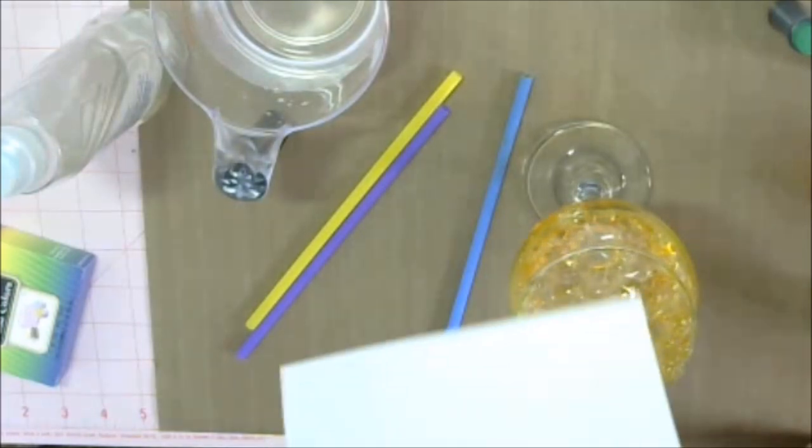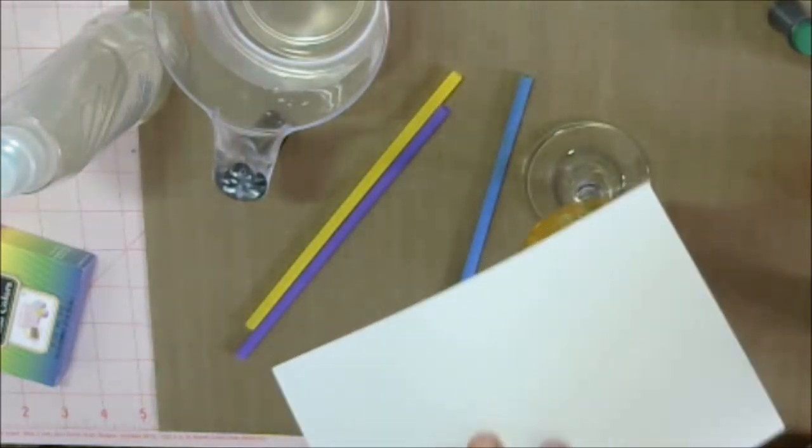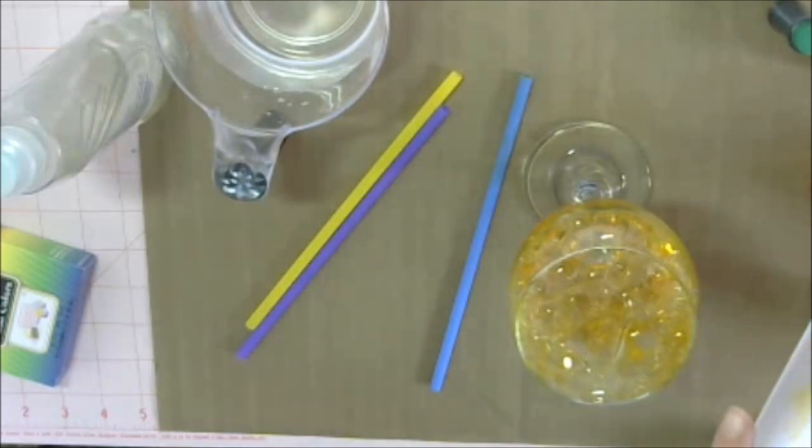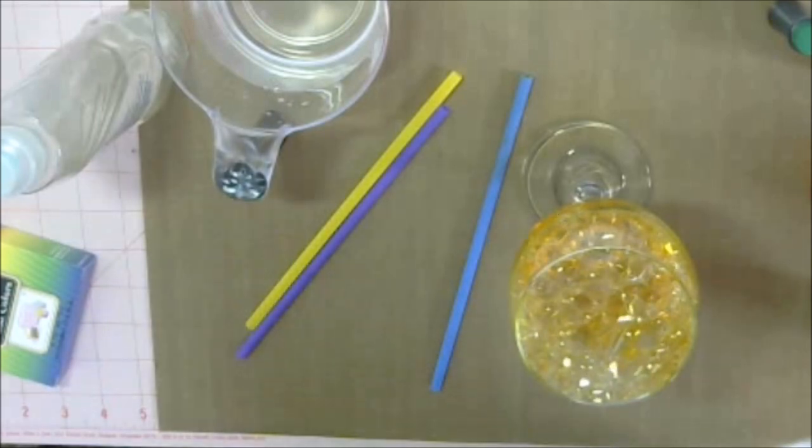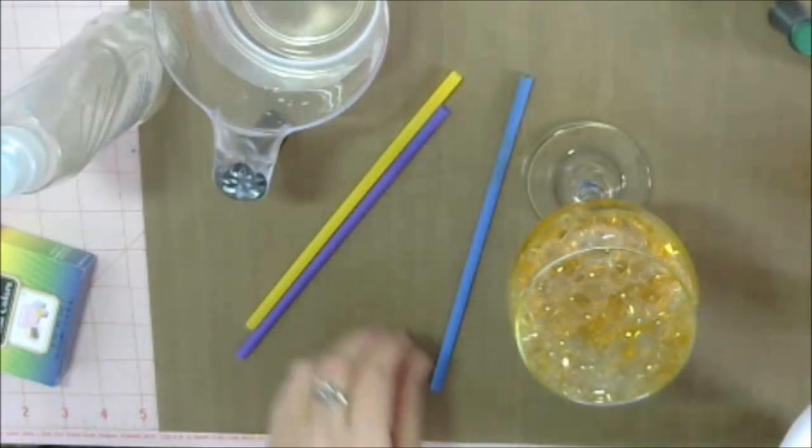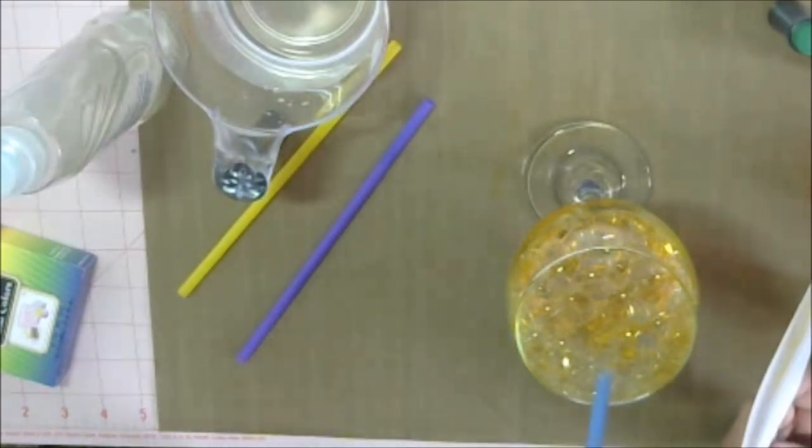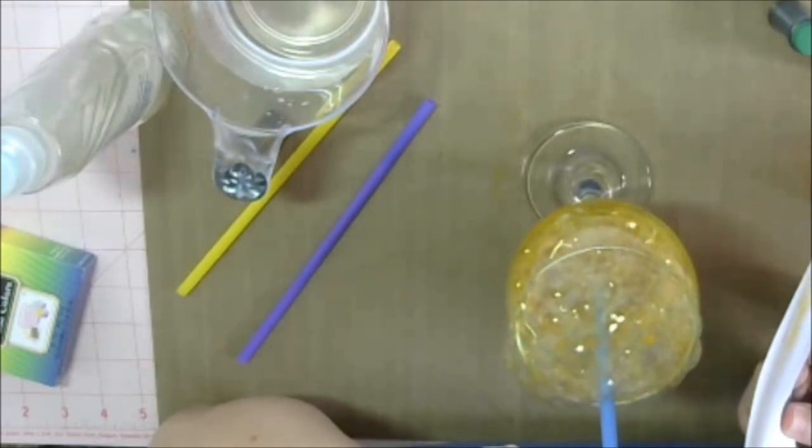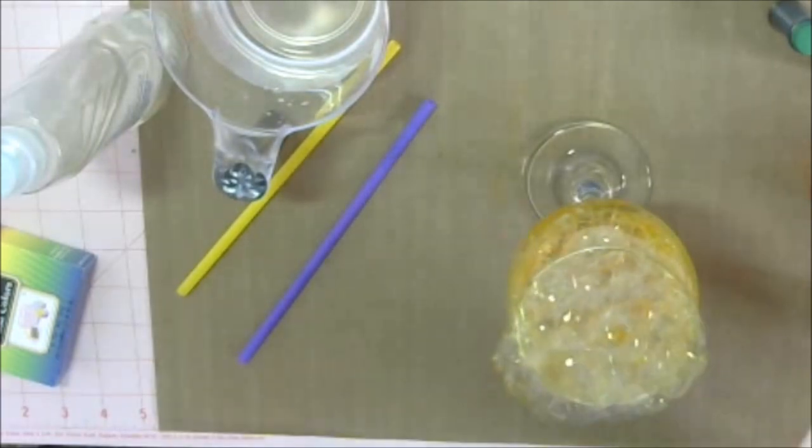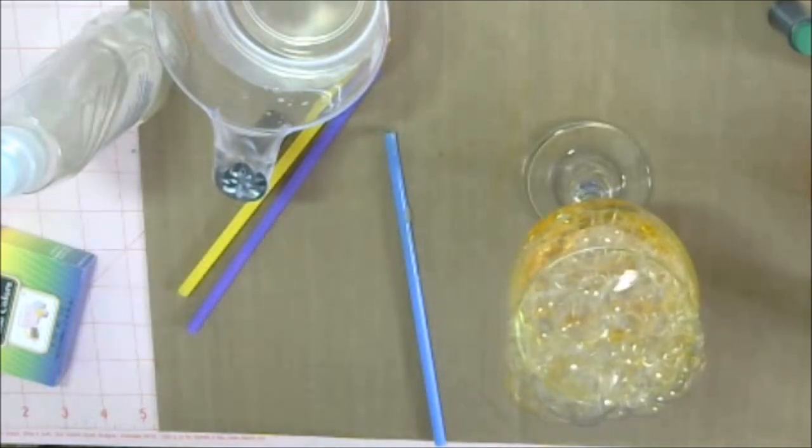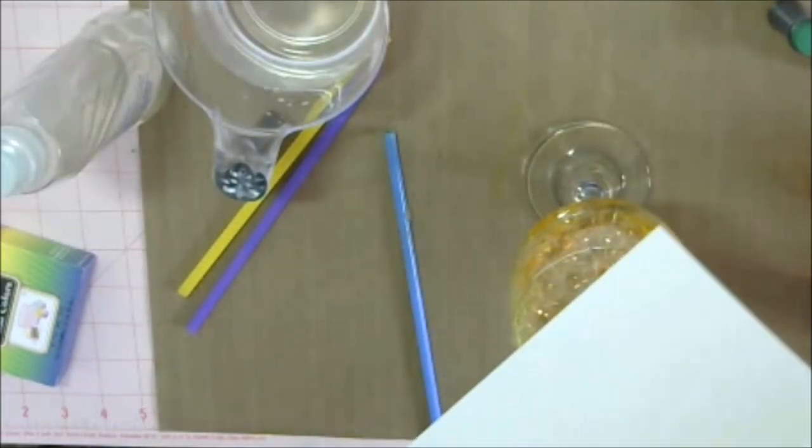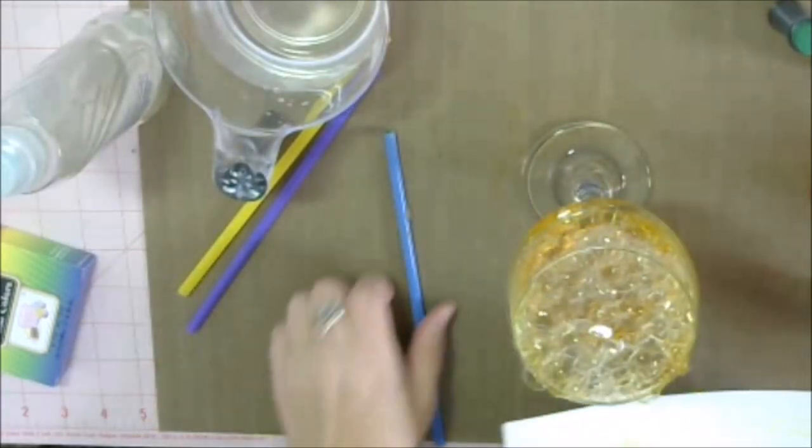And all we're going to do is take our paper and lay it down over the bubbles. And as you can see, you get some beautiful design there. And the reason I put the food coloring over the bubbles is because it gives you a more intense coloration. You can mix it in with the water, you'll get a lighter color, and that's just fine too. But this way it gives just a little bit more depth to your paper.